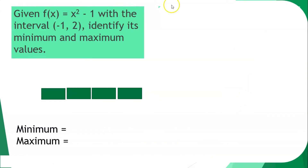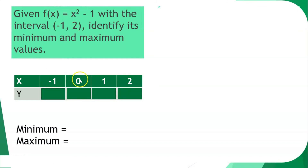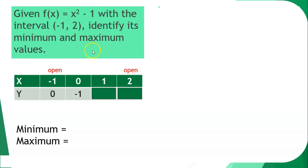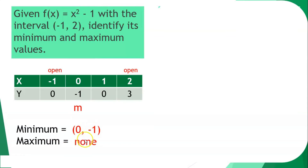Given x squared minus 1 with the open interval from negative 1 until positive 2, using a table of values with x = negative 1, 0, 1, 2 — note it is parentheses, so both endpoints are open. At x = negative 1, y = 0; at x = 0, y = negative 1; at x = 1, y = 0; at x = 2, y = 3. The highest value is at 2, 3, while the lowest is at 0, negative 1. So the minimum is 0, negative 1, while the maximum is none — because 2 is excluded since the interval is open.